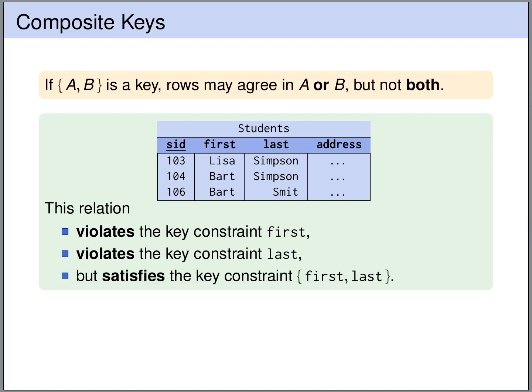If a key contains more than one attribute, we speak of composite keys. For a relation with composite key AB, rows may agree in the value for attribute A, or agree in the value for attribute B, but not both at the same time. For the students table, first name alone and last name alone each violate the key constraint, but taking first and last together satisfies it — if you tell me the first and last name, you can find a unique row.